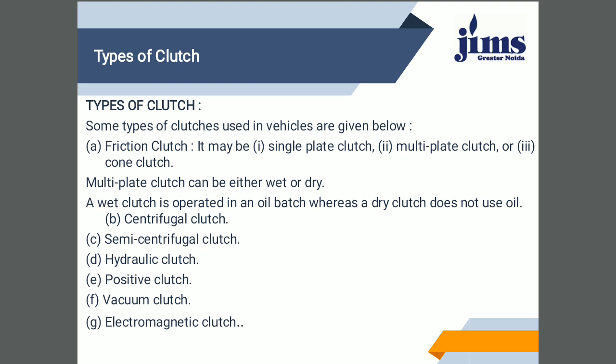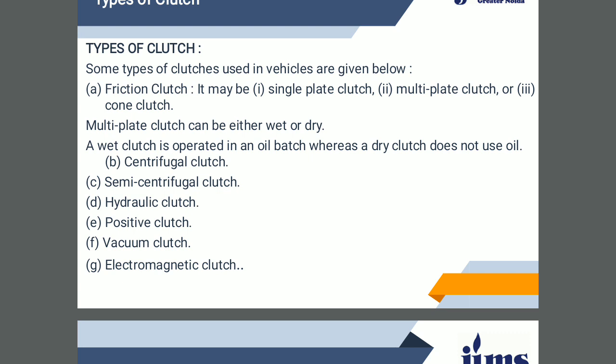The types of clutch generally used in automobile engineering include the friction clutch, which works on the principle of friction. It may be categorized as the single-plate clutch, multi-plate clutch, and cone clutch. The multi-plate clutch can be either wet or dry. Wet means you are using an oil bath for the multi-plate clutch; dry means you are not using oil. The third type is the centrifugal clutch, and next ones include semi-centrifugal clutch, hydraulic clutch, positive clutch, vacuum clutch, and electromagnetic clutch.